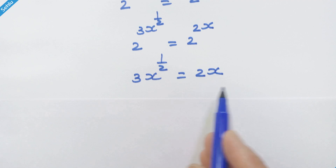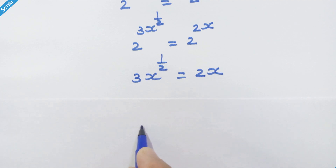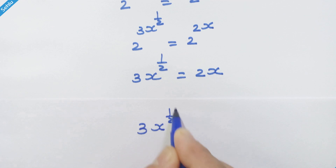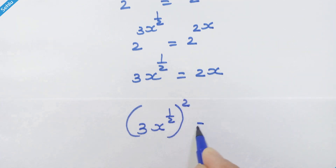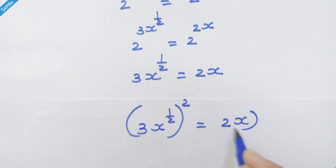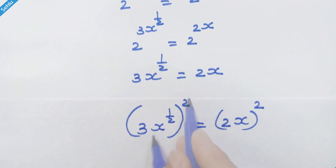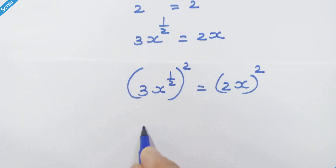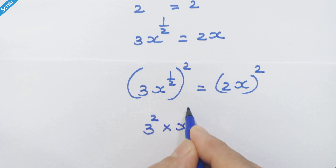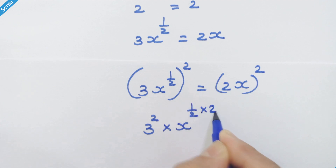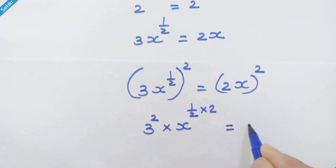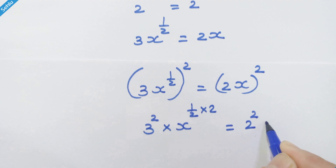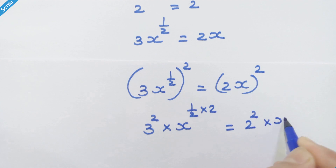Now let's square both sides. So we have (3x raised to 1/2) whole squared is equal to (2x) whole squared. Now the square also applies to 3, so we can write 3 squared times (x raised to 1/2 times 2) is equal to 2 squared times x squared.